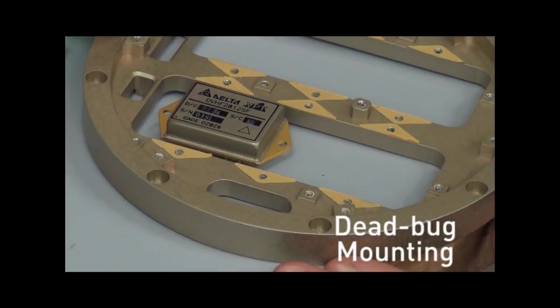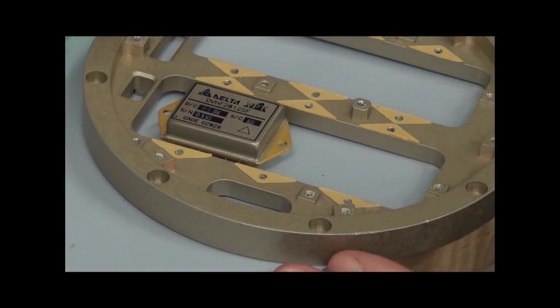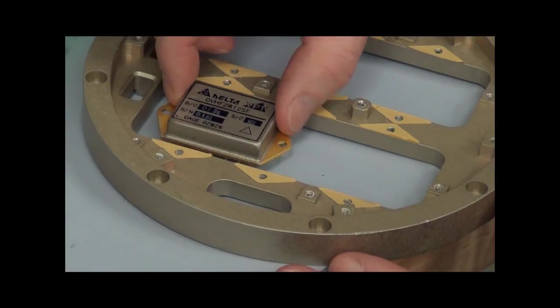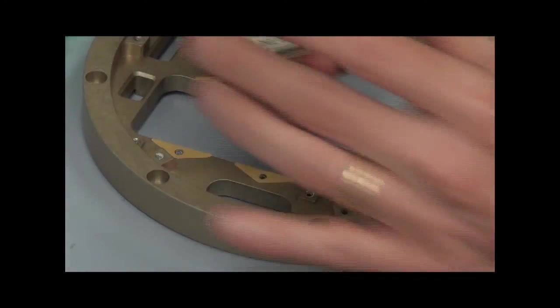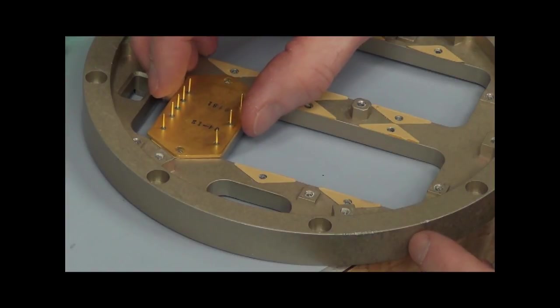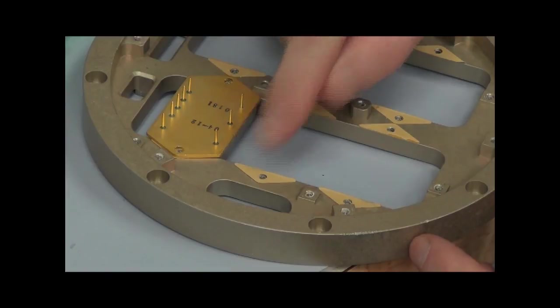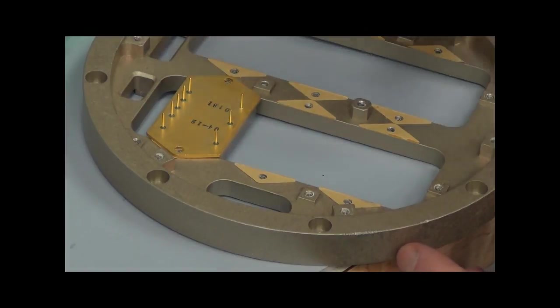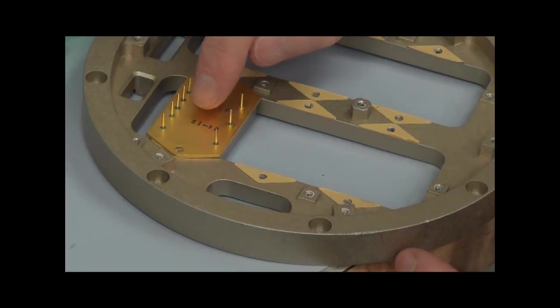Now we'll look at another mounting configuration. This is typically called a dead bug mounting. We'll take the DC-DC converter here and mount it upside down in the chassis. You can see there's a thermal pad already in the chassis. In this case the heat will conduct through the base plate to the flange and there to the chassis.